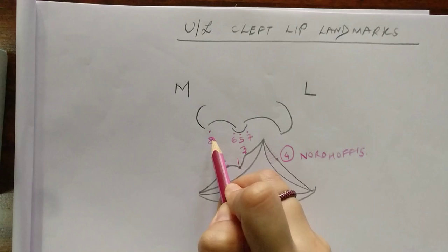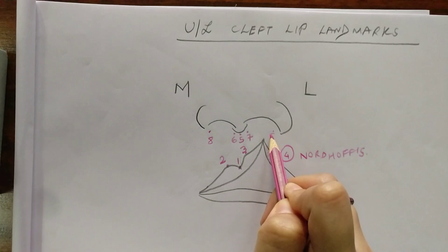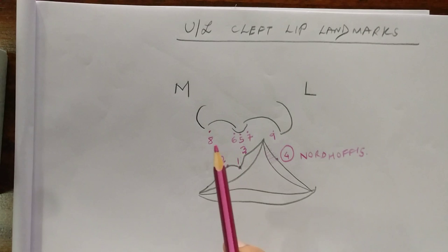Now point 8 is the base of the ala on the non-cleft side, and equidistance such as 6 and 8 from 7, we'll get point 9 which is where the base of the ala will lie on the cleft side.